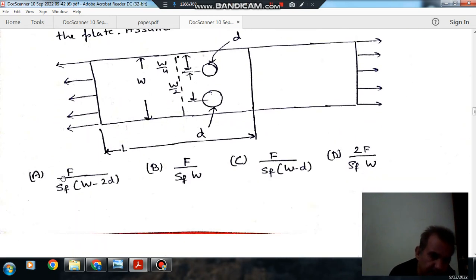So options are: (A) F divided by SF bracket W minus 2D. Option B: F divided by SF by W. Option C: F divided by SF bracket W minus D. Option D: 2F divided by SF into W.